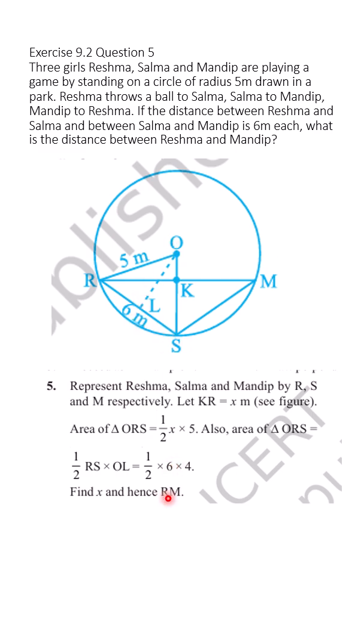We can also drop perpendicular here. So half into RS into this OL. You know half into RS, which is 6, and our OL is 4. So we will substitute the values.